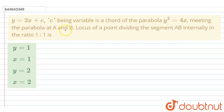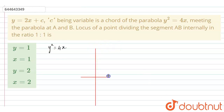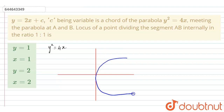Okay students, so first I'm going to write the given condition here. The given parabola equation is y² equal to 4x. Now I'm going to draw the diagram here. So this is the x and y axis, and this is the parabola.